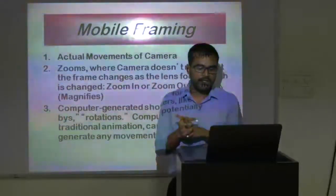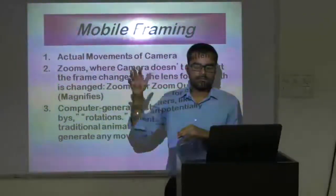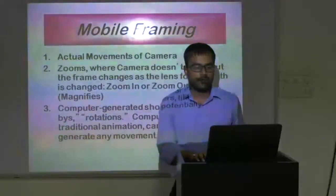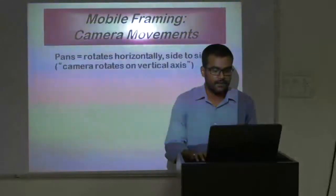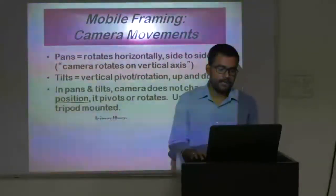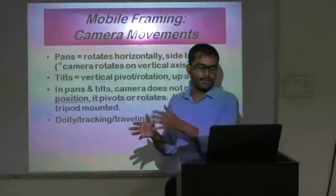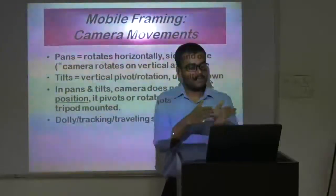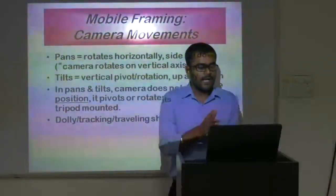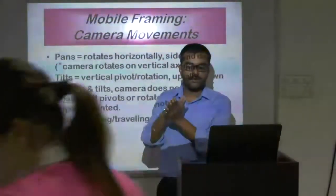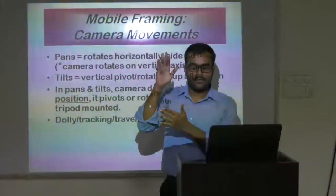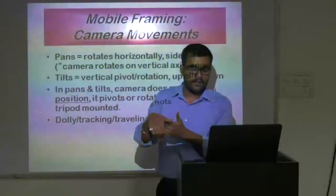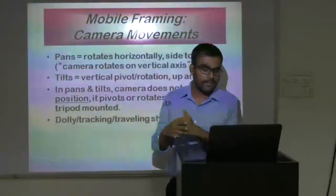And then we have computer generated shots, which is basically visual effects — we create all these kinds of effects in the computer. And then we have pans and tilts. Pan is when the camera moves from left to right or right to left. And then tilt is where the camera moves from vertical to horizontal, or horizontal to decline — so it's the movement of the camera.